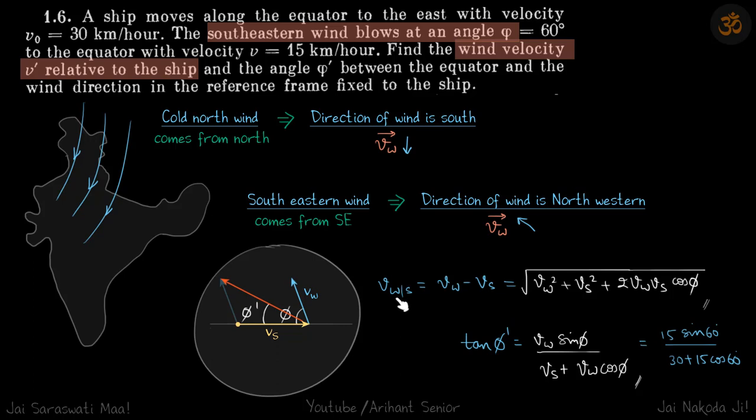Velocity of wind with respect to ship is velocity of wind minus velocity of ship. If the angle between them is phi, the vector sum of Vw and minus Vs will be this, and its magnitude will be square root of Vw squared plus Vs squared plus 2VwVs cos phi, because phi is the angle between Vw and minus Vs. Let me write it in vector form. This is the magnitude of our wind.